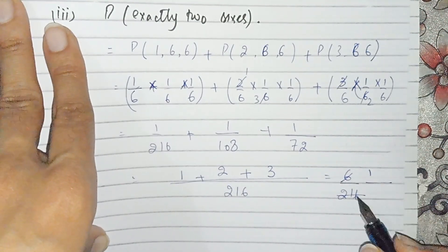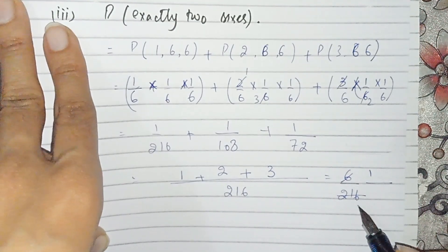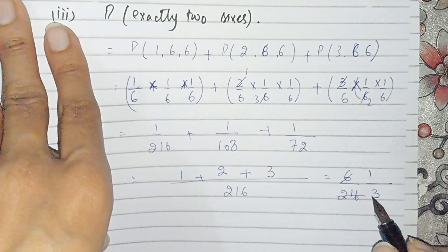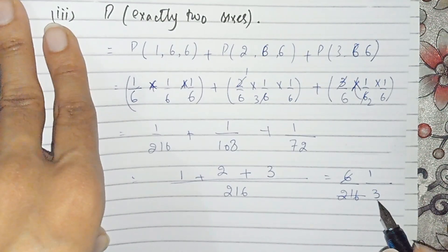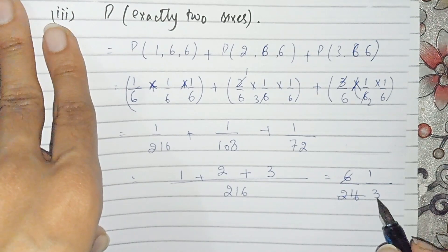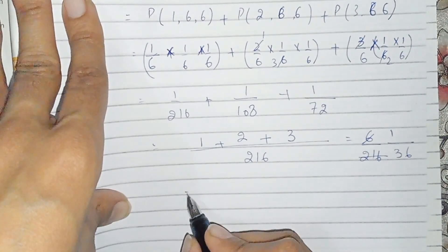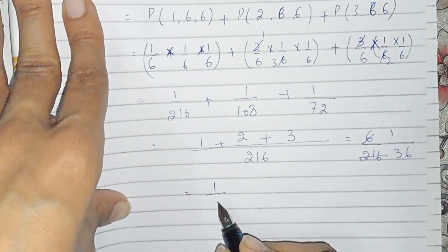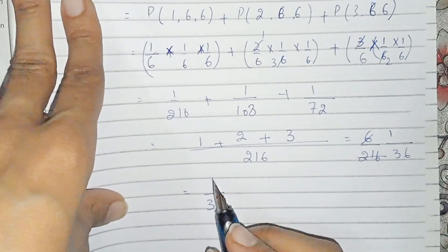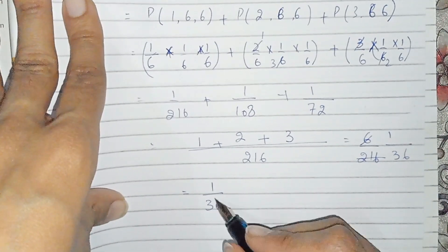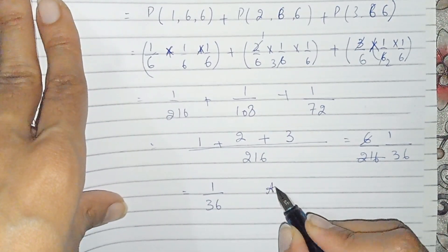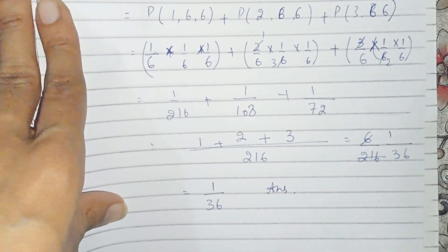Adding the three values gives 6 over 216, which simplifies to 1 over 36. So the probability of obtaining exactly two sixes is 1 over 36.